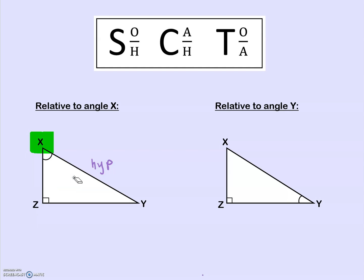How about opposite and adjacent? If we're talking about angle X, the side that's opposite angle X is the side that's across from it — so this is going to be our opposite. Adjacent means next to, so this last side is going to be next to angle X. Our hypotenuse also connects, but it stays our hypotenuse. That's how we label our sides.